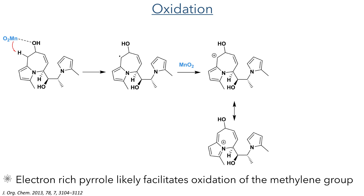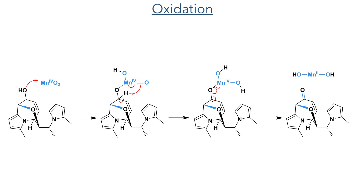Reaction of the compound with manganese dioxide first abstracted a hydrogen radical from the position alpha to the hydroxyl group. Further oxidation generates a cation that is likely stabilised by the electron-rich pyrrole. Intramolecular attack of the hydroxyl group can then occur, forming a pyrane. The hydroxyl group is then oxidised by the manganese dioxide, which first coordinates to it making it more electrophilic and allowing for the abstraction of a hydrogen radical. Homolytic cleavage of the oxygen-manganese bond completes the oxidation to form the enone.